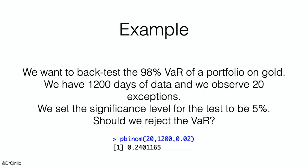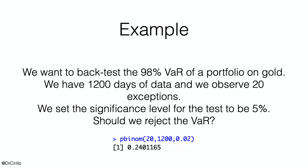In the second example shown on screen, we are conversely possibly underestimating VaR. If we compute our p-value, we observe that we have to reject the null hypothesis — so our VaR is not reliable. There are obviously other tests that can be used to backtest VaR. One example is the test by Kupiec. For the Kupiec test, I refer you to the reading materials of this lesson.